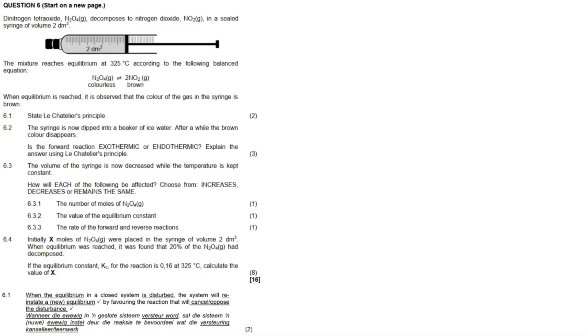Question 6: dinitrogen tetraoxide (N₂O₄) decomposes to nitrogen dioxide (NO₂) in a sealed syringe of volume 2 dm³. The mixture reaches equilibrium at 325°C. At equilibrium the gas in the syringe is brown. Since N₂O₄ is colorless and NO₂ is brown, this tells us that at equilibrium there is more NO₂ present.